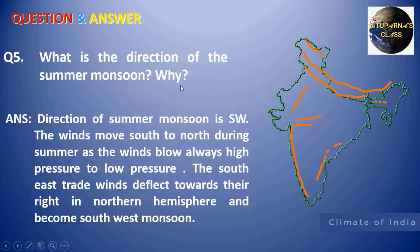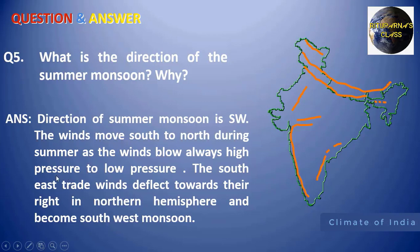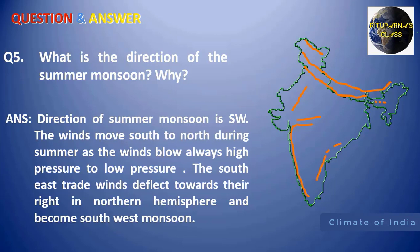Next: what is the direction of the summer monsoon and why? The direction of the summer monsoon is southwest. During the hot weather season, there is development of a low pressure system over the northwestern portion of India, which attracts rain-bearing winds from the south. The southeast trade winds deflect to the right when crossing the equator and entering the northern hemisphere, and thus become the southwest monsoon.